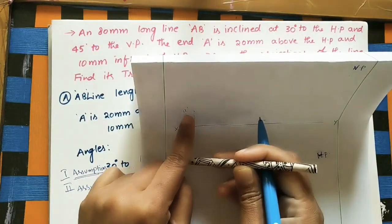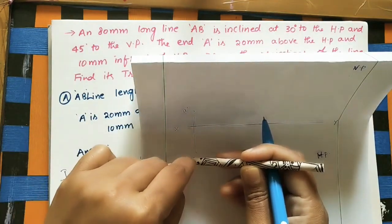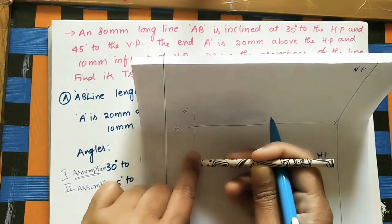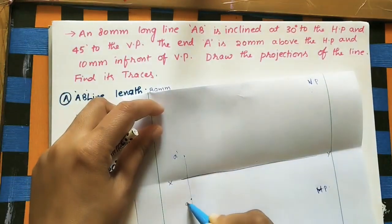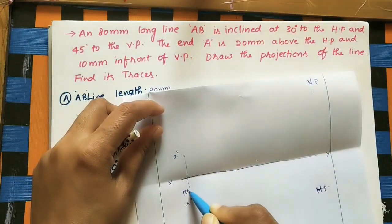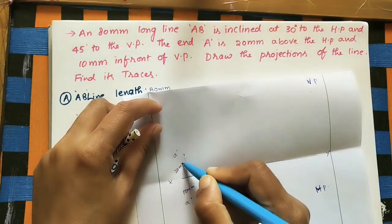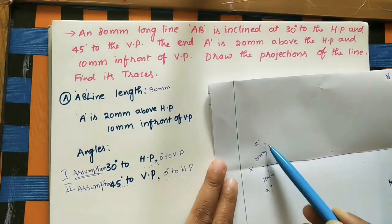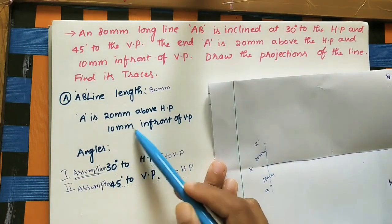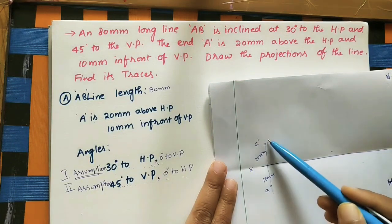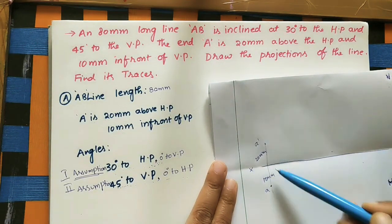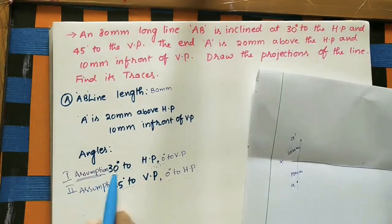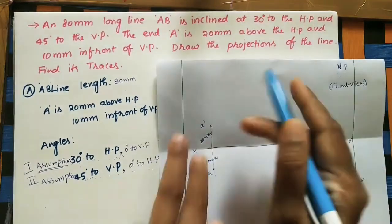For the top view, A is 10 mm in front of VP, so we mark point a below the XY line at 10 mm. Remember: above HP means above the XY line; in front of VP means below the XY line. Points a-dash and a must always lie on the same projector line.